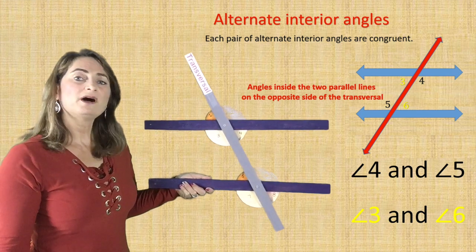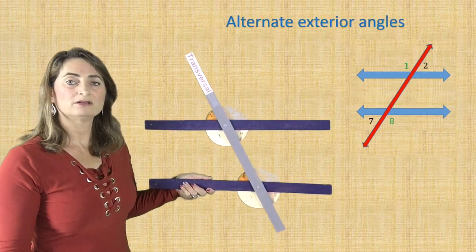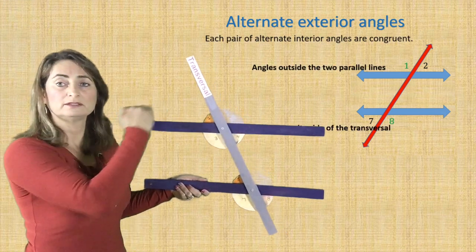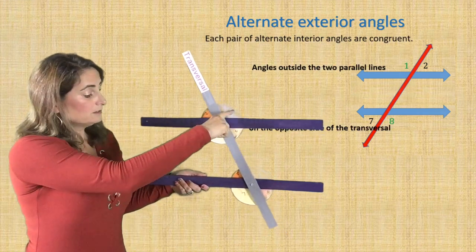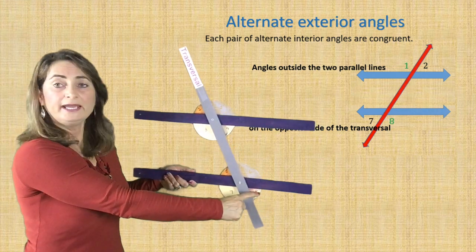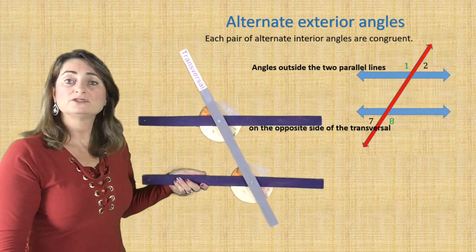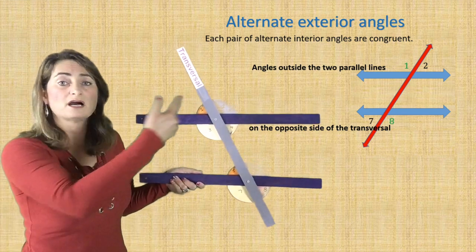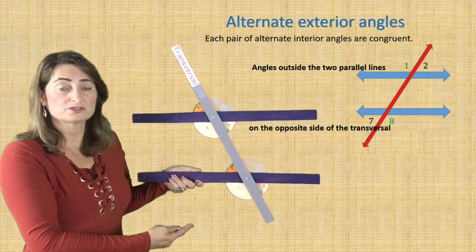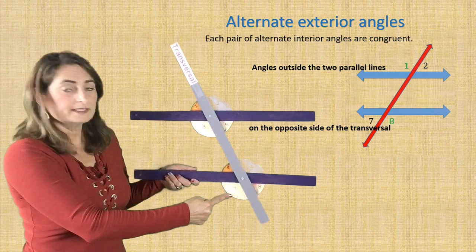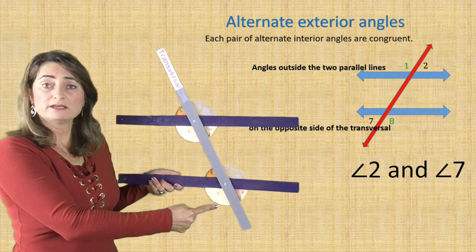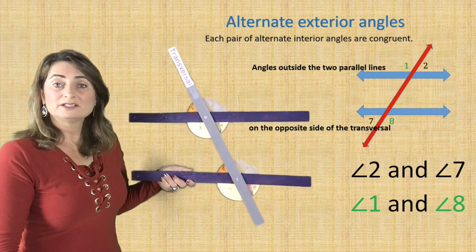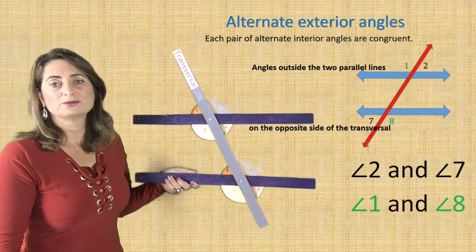Now what about alternate exterior angles? Think about the angles outside the two parallel lines — angles one, two, seven, and eight are outside of the two parallel lines. Alternate means they are on the opposite side of the transversal. So angles two and seven are alternate exterior angles and they are congruent. Angles one and eight are alternate exterior angles and they are congruent.